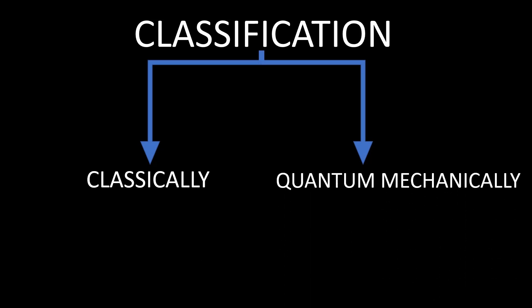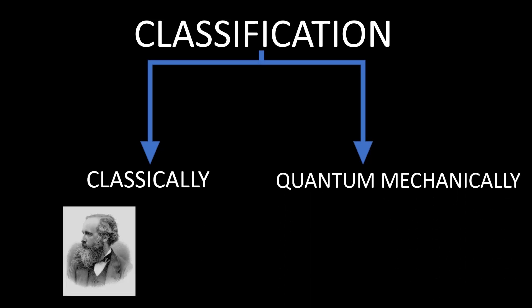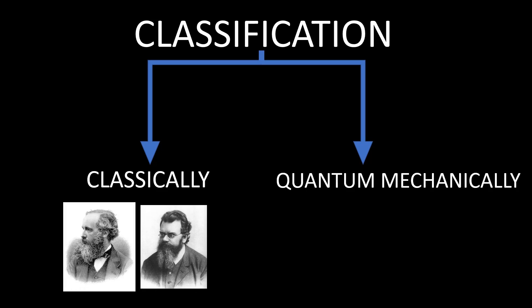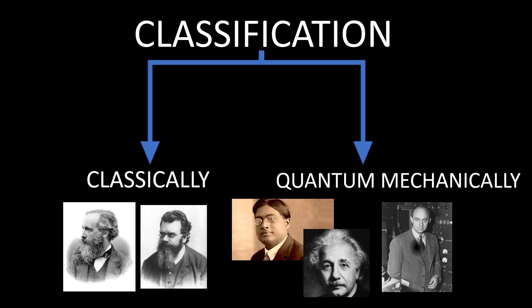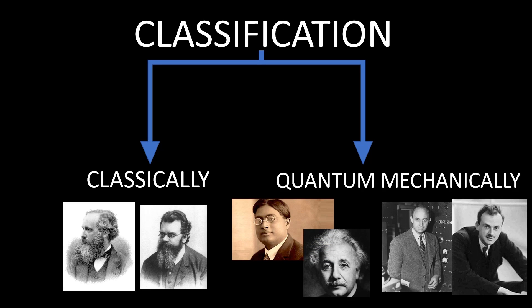Now if we treat the system classically then we have the Maxwell-Boltzmann statistics. If we treat it quantum mechanically then depending on the type of particles we have two statistics: one is Bose-Einstein statistics and the other is Fermi-Dirac statistics.